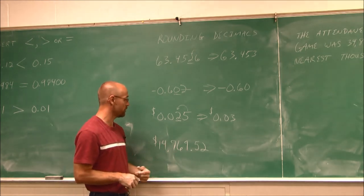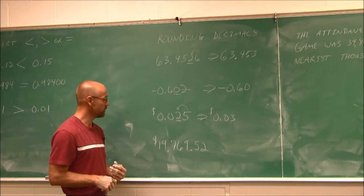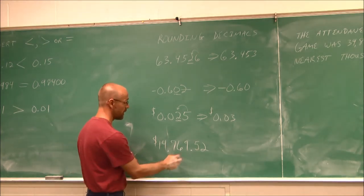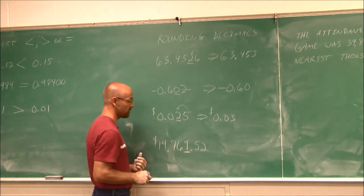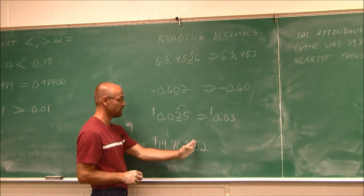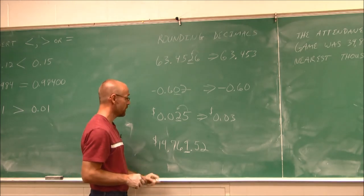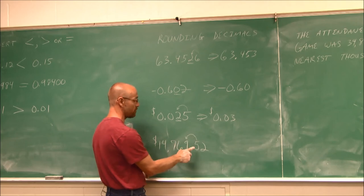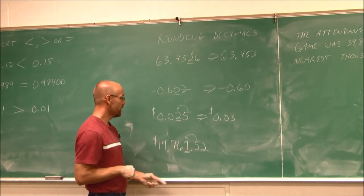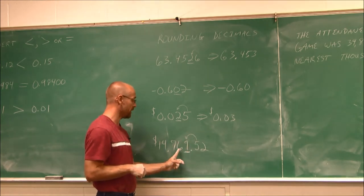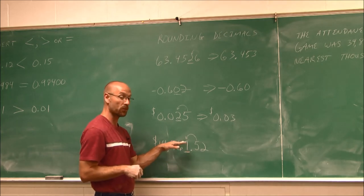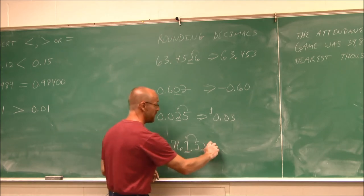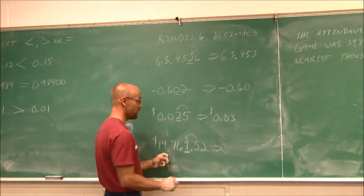What if we wanted to round this to the nearest dollar? This is the ones place, and we're dealing with money so we want to round off the cents. I look at this value and see I have to round up because it's 5 or greater. This digit is 9, and each place can only have digits 0 through 9 — if I go greater than 9, I have to carry.